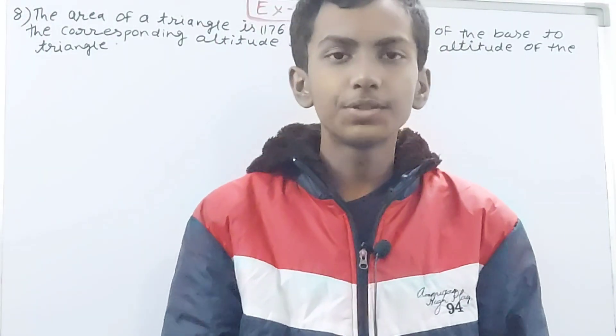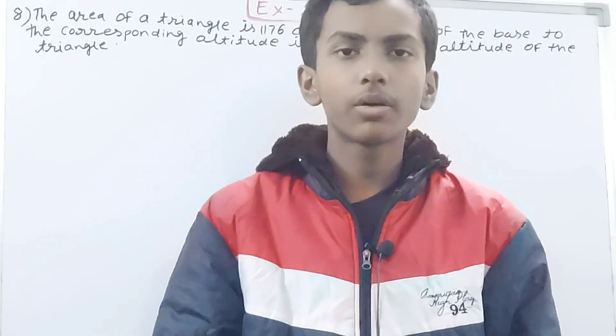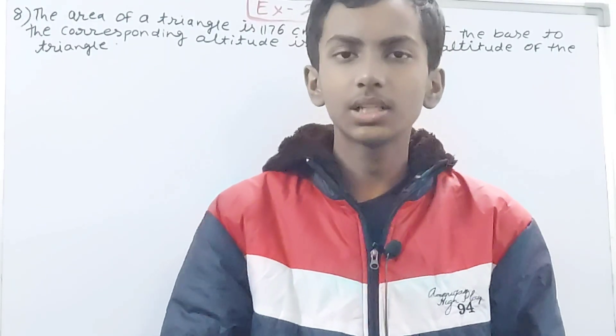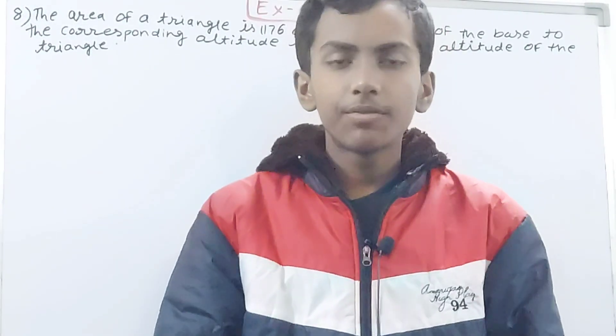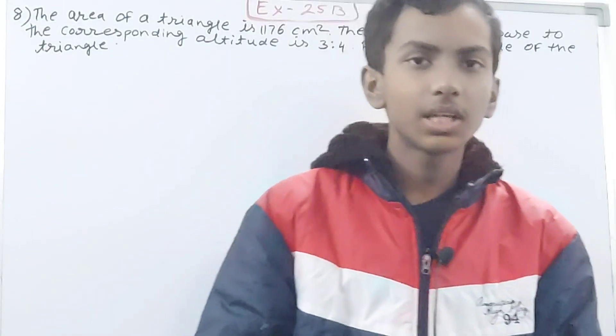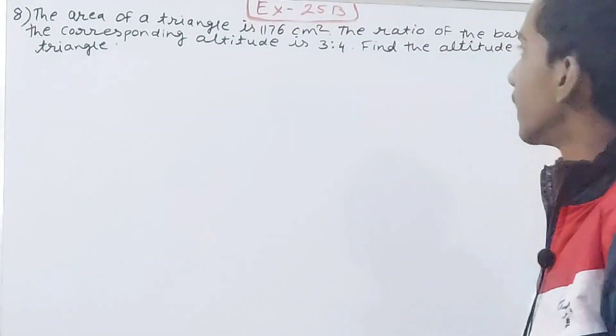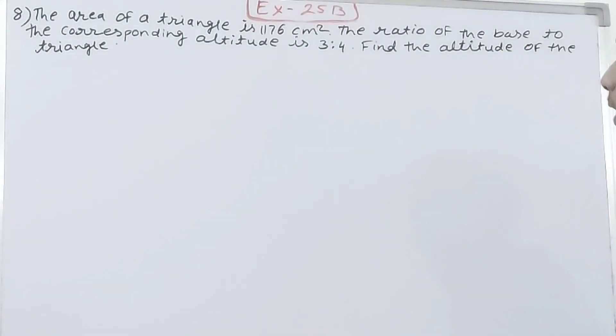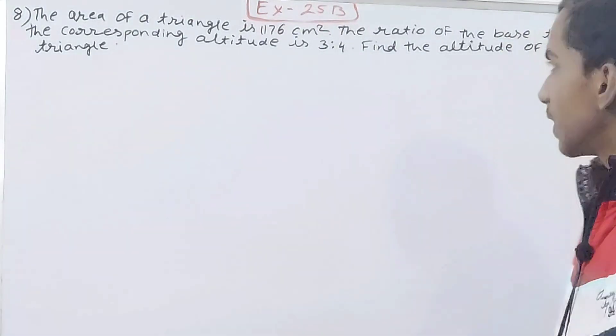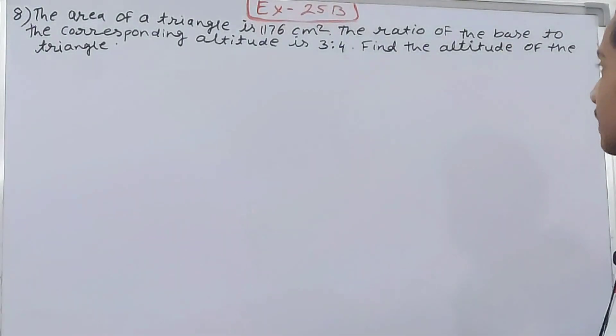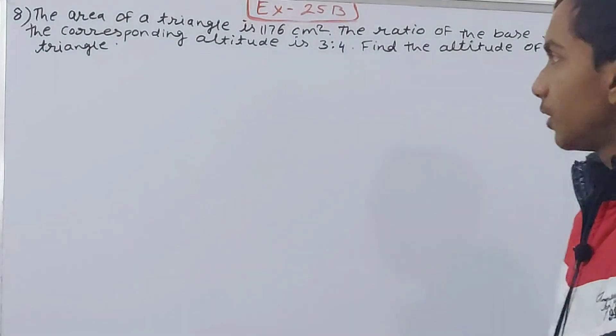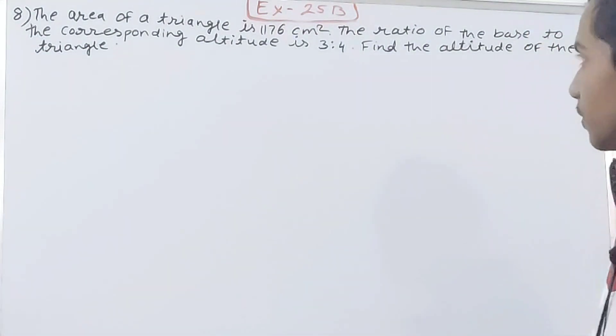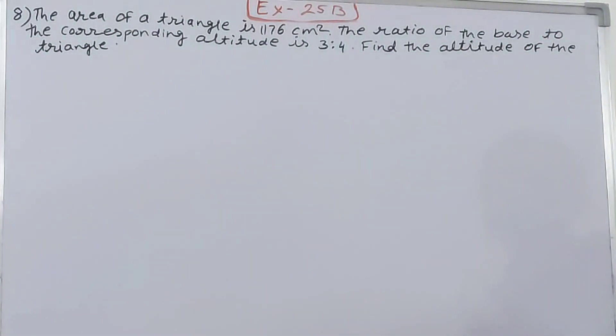Hello friends, welcome back to my YouTube channel Unlock Your Learning. In this video we are going to solve ICICI Mathematics Class 8 Chapter 25 Area of Rectilinear Figures Exercise 25B Question 8. The area of a triangle is 1176 square centimeters, the ratio of the base to the corresponding altitude is 3 is to 4, find the